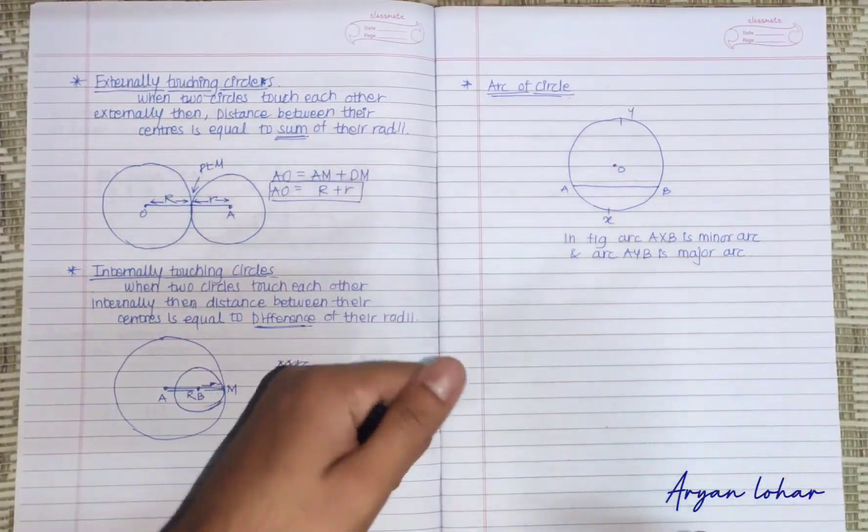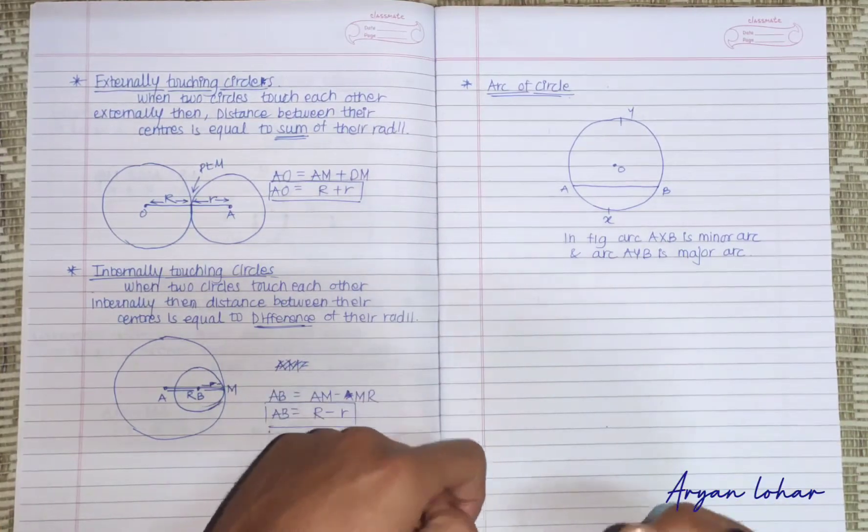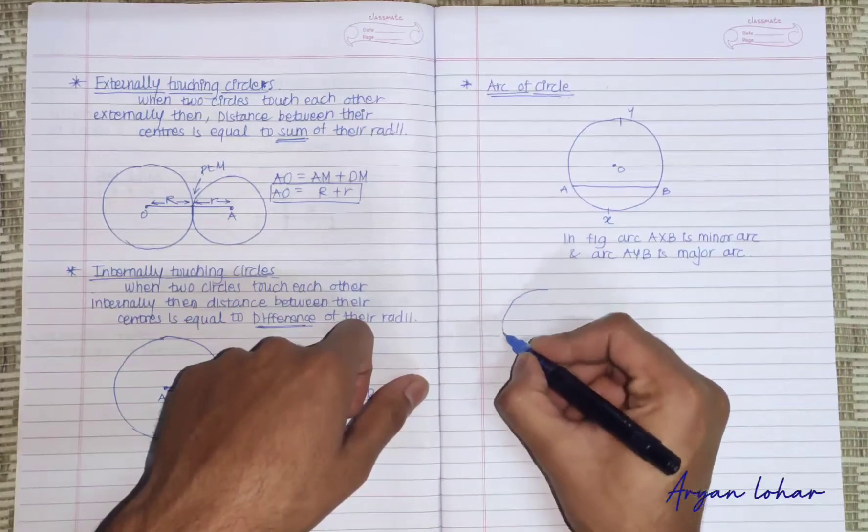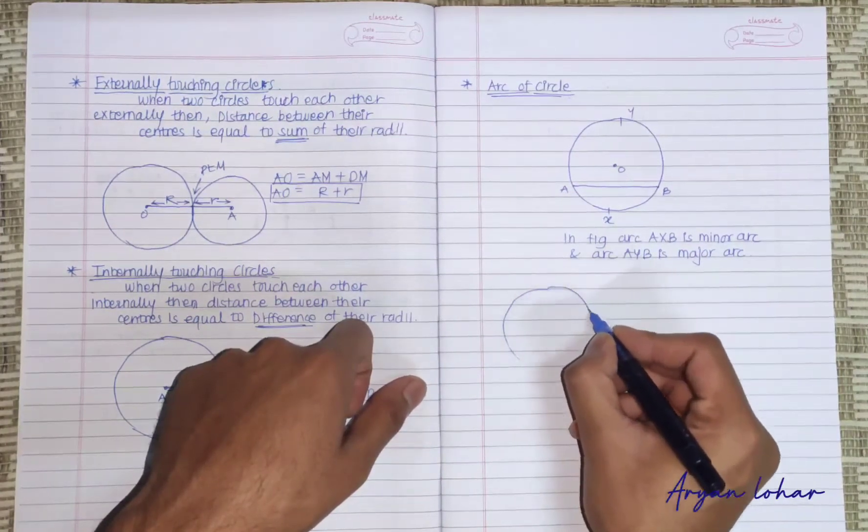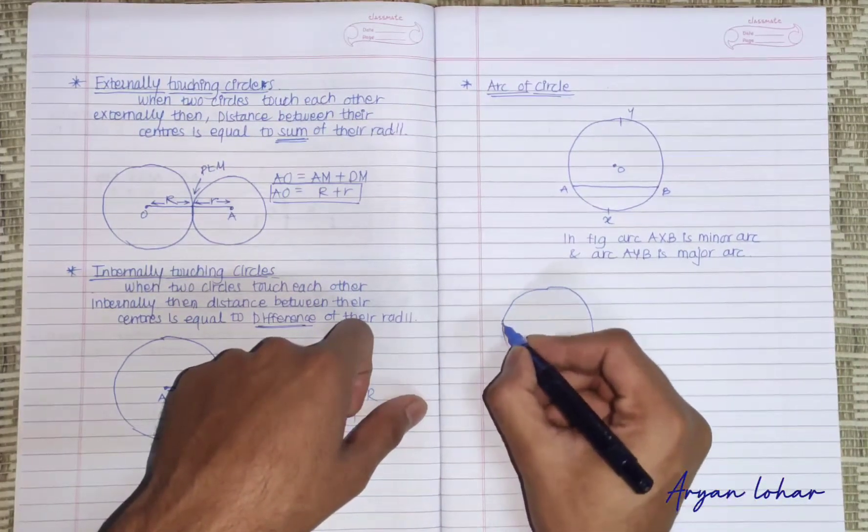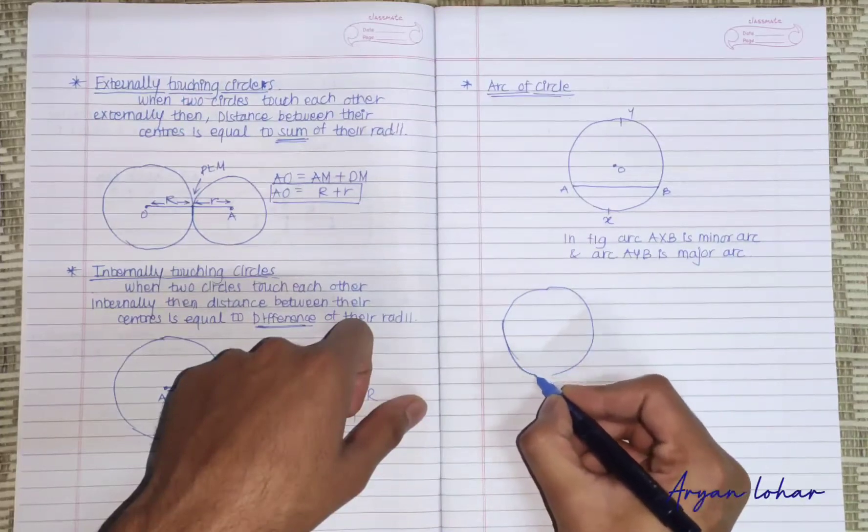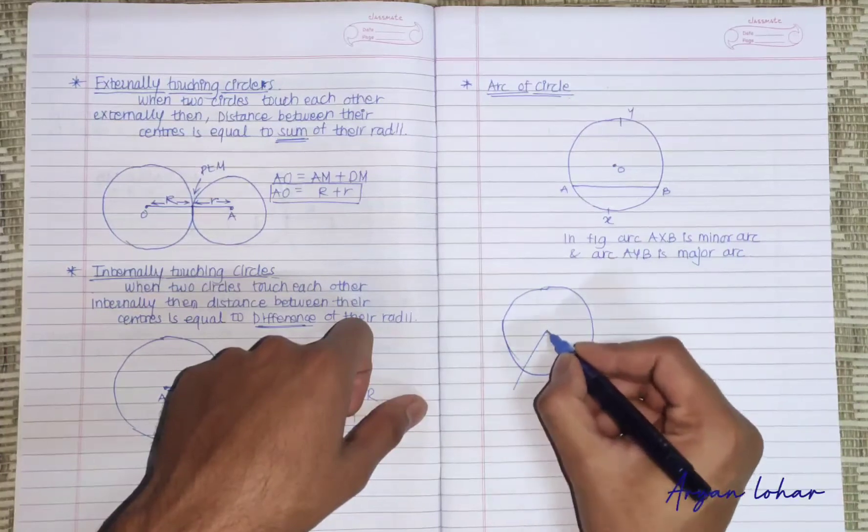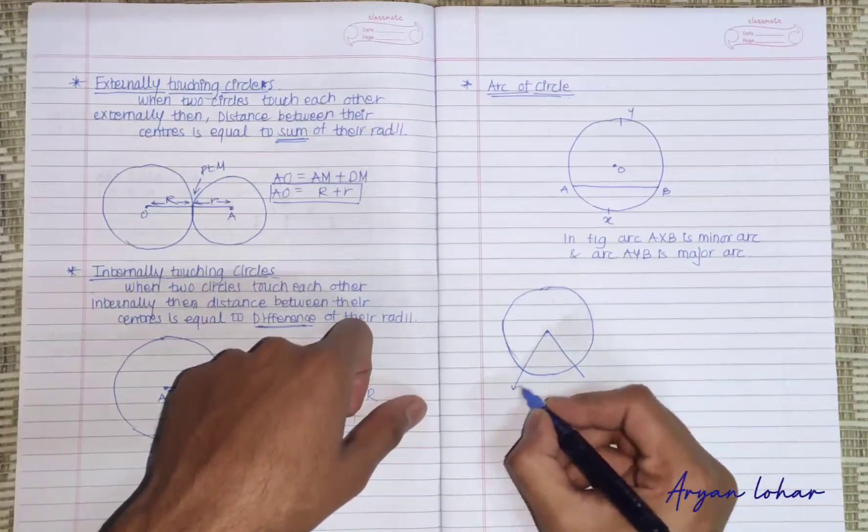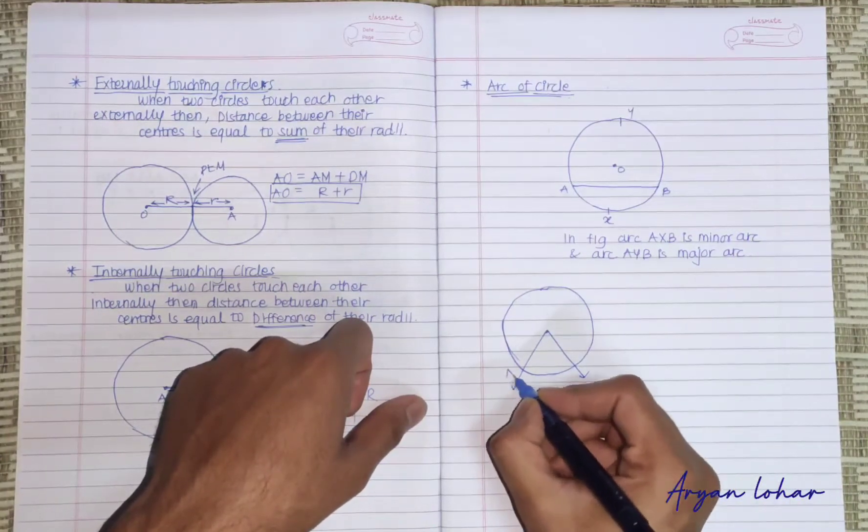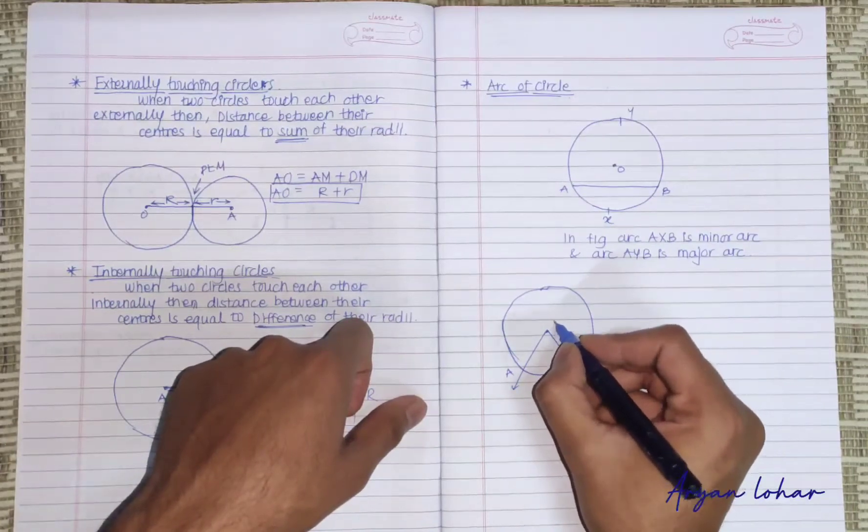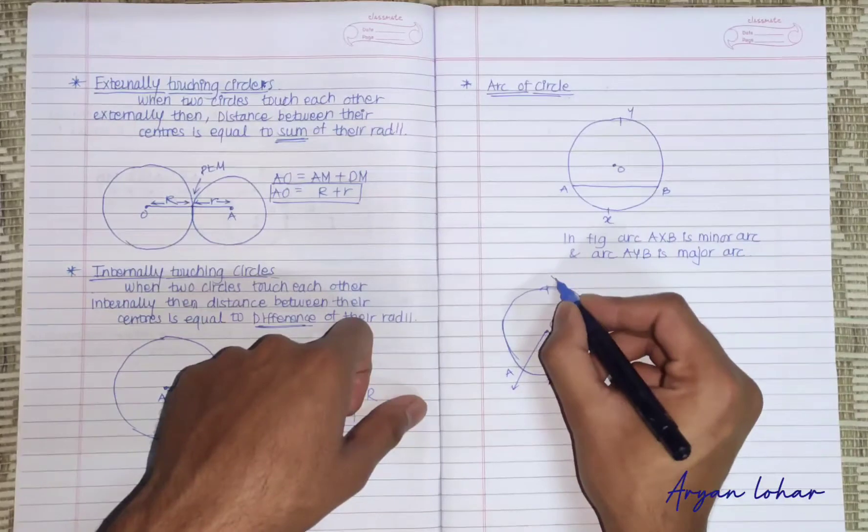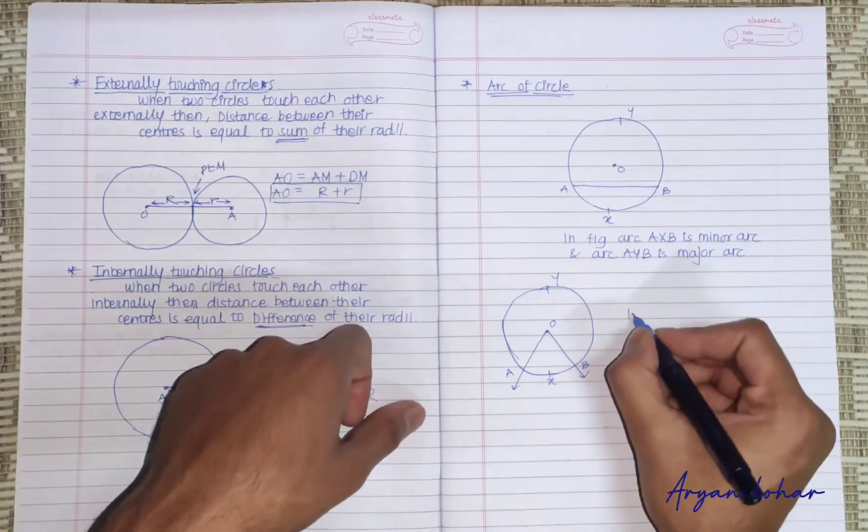So before we start studying theorems, these are some basic concepts. Suppose this is another circle and one angle is drawn here, from center, angle A, O and B, and here is X and here is Y.